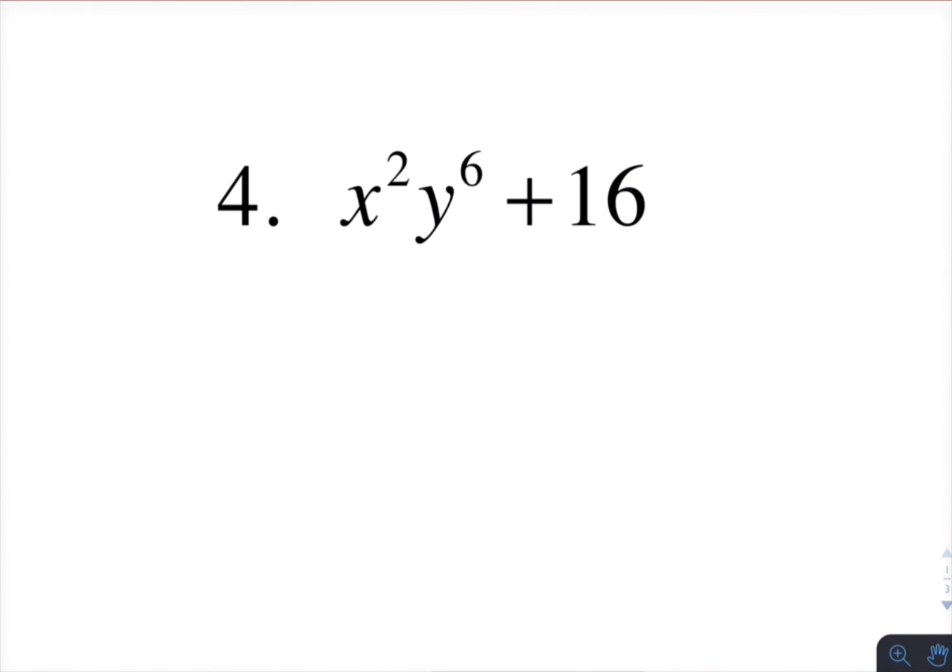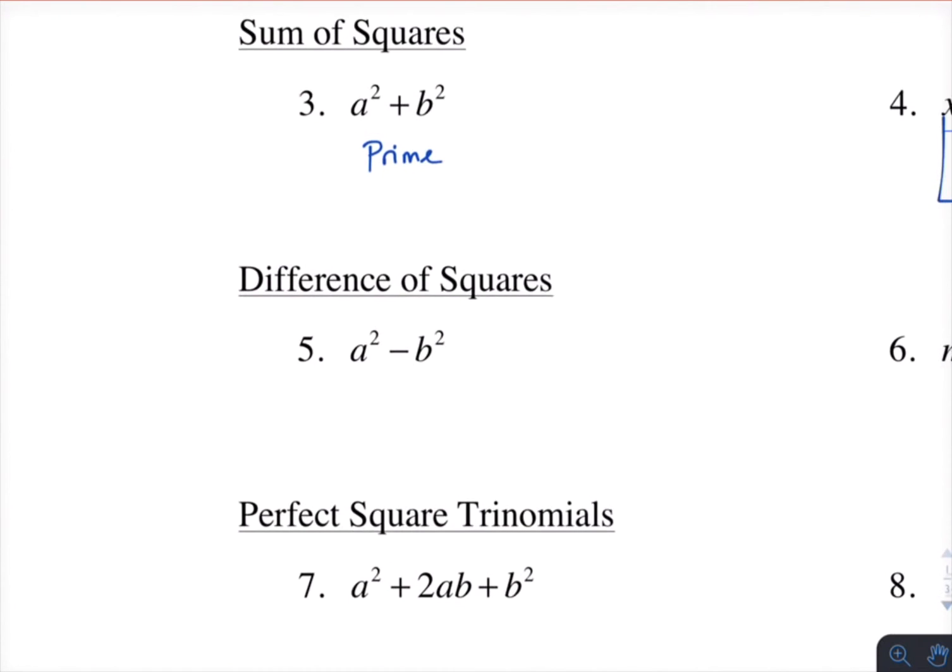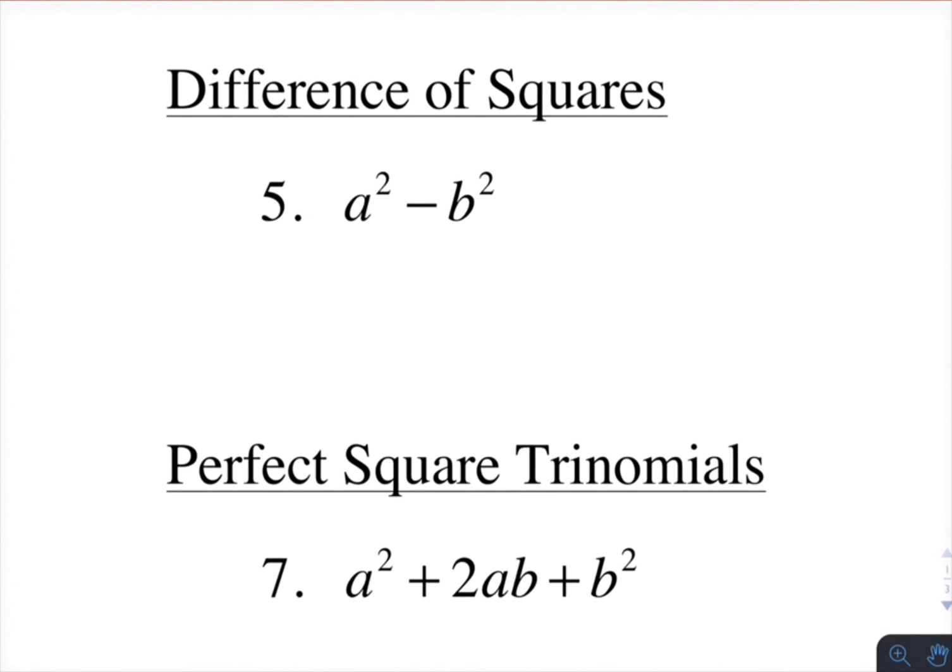So here's an example of the sum of squares. So it is prime. But we have the difference of squares, and this one is factorable. So it's a plus b, a minus b.